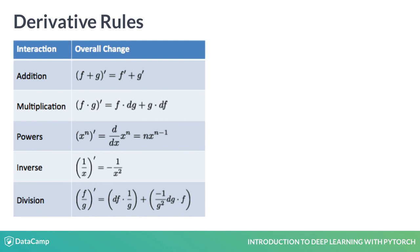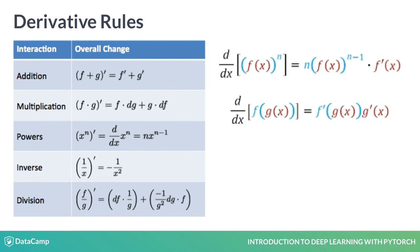The derivative of a number times a function is the number. For example, the derivative of 3x is 3. The derivative of a constant number itself is always 0. The derivative of something with respect to itself is always 1. Another important rule is the chain rule, which deals with the composition of functions. In the example in the slide, the derivative of f(g(x)) is the derivative of f evaluated at g(x), times the derivative of g(x).